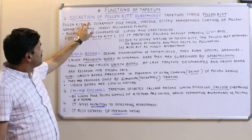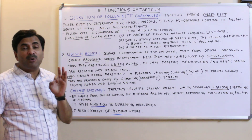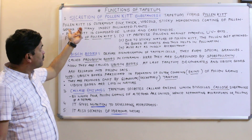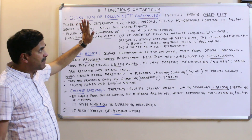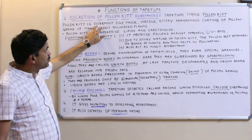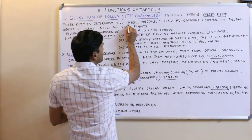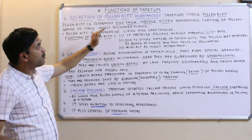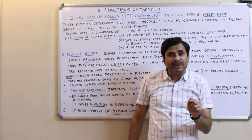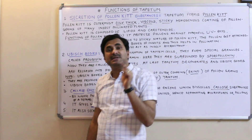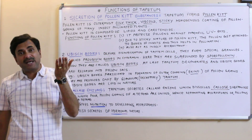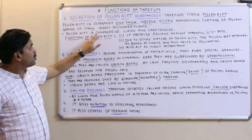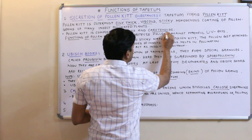Number one: secretion of pollen kit substances. The tapetum forms the pollen kit. Pollen kit is the outermost oily, thick, viscous, sticky, and homogeneous coating of the pollen grain of many insect-pollinated plants. It is found outside the exine and is composed especially of lipids and carotenoids.